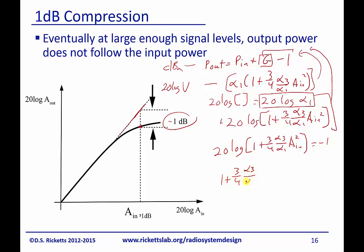alpha_1 times A_in squared equals 10 to the minus 1 over 20. And then I can subtract 1, I can get rid of this on this side. And then I can multiply by 4 alpha_1 over 3 alpha_3 times 10 to the minus 1 20th minus 1.